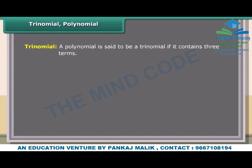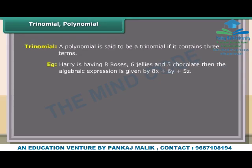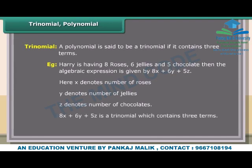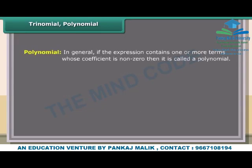Trinomial: A polynomial with three terms. Example: Harry has 8 roses, 6 jellies, and 5 chocolates, expressed as 8x + 6y + 5z, where x = roses, y = jellies, z = chocolates — 8x + 6y + 5z is a trinomial. Polynomial (general): If the expression contains one or more terms with non-zero coefficients, it is called a polynomial. Example: 4x + 4xy + 17xz² − 10y²z + 19.